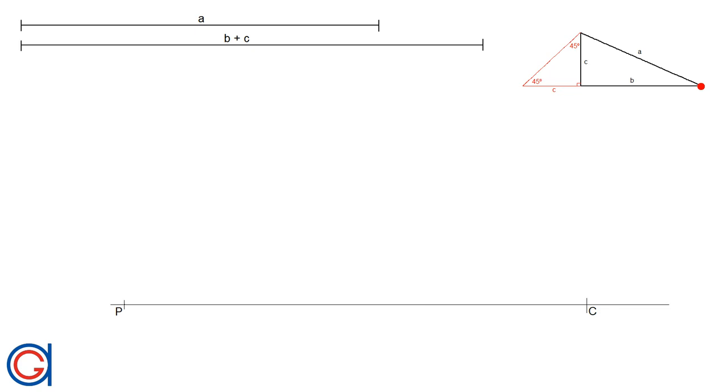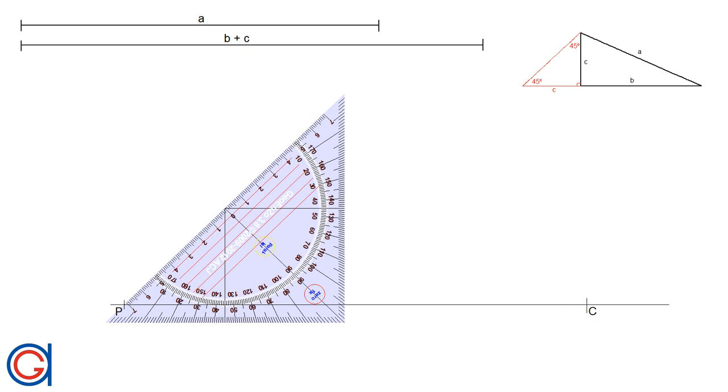So now the next step, with our protractor we're going to draw a 45 degree ray from point P as can be seen here.